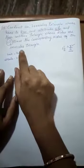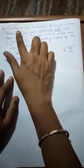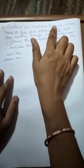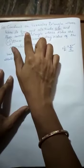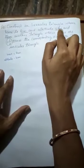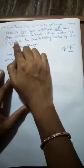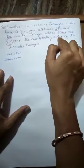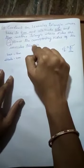Question number 4. Construct an isosceles triangle whose base is 8 cm and the altitude is 4 cm and another triangle whose sides are one and half times the corresponding sides of the isosceles triangle.